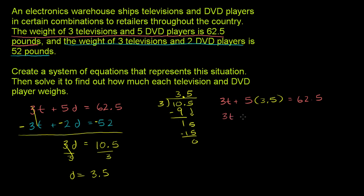So you get 3T plus, what is this going to be? This is going to be 15 plus 2.5, right? 5 times 0.5 is 2.5, 5 times 3 is 15, so it's 17.5, equals 62.5.